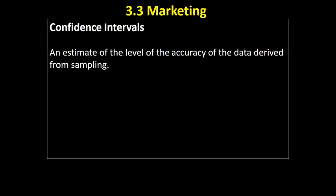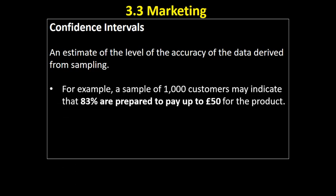We can use confidence intervals to determine this. A confidence interval is an estimate of the level of accuracy of the data derived from your sampling. For example, a business may have used a sample of a thousand customers and found that 83% of their customers are prepared to pay up to £50 for a product.